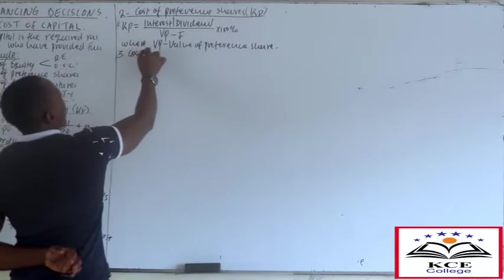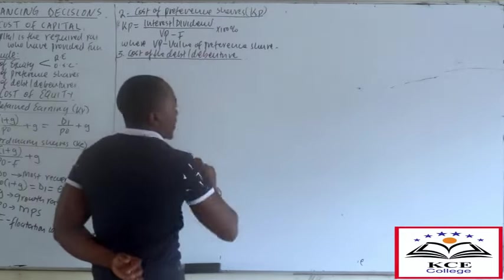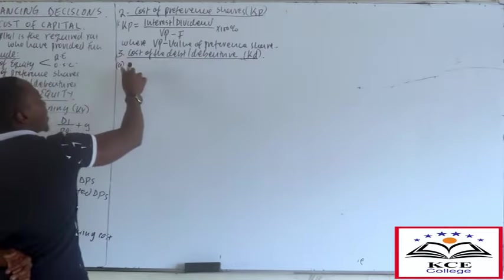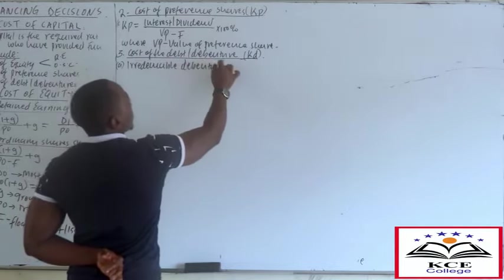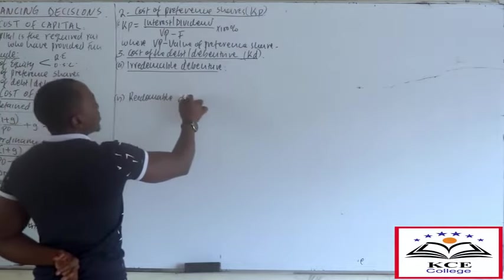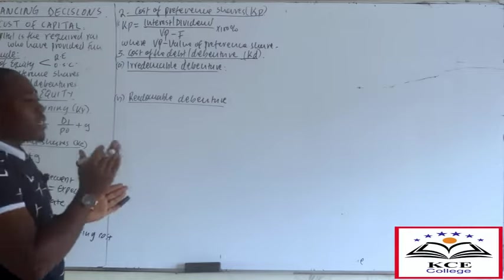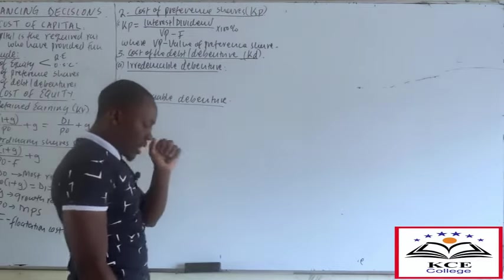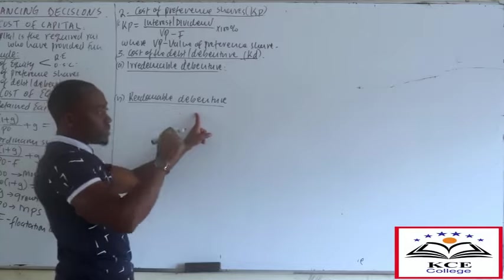Number three is the cost of debt or debentures, denoted by KD - the required rate of return by debt holders. KD is classified into two: irredeemable debt and redeemable debenture. An irredeemable debenture has no specific maturity period - it will exist to infinity. A redeemable debenture has a specific maturity period, like a government bond that matures after 10 years.